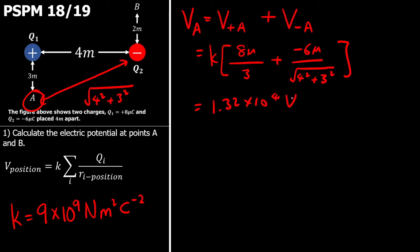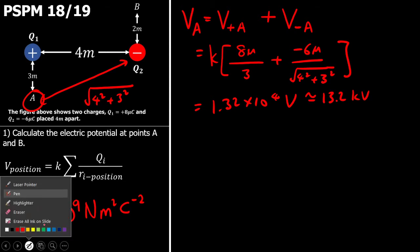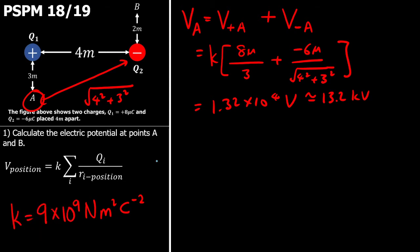So that's about 13.2 kilovolts. So the next part of the question is the potential at B, VB.